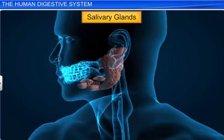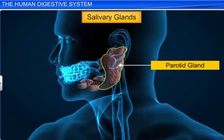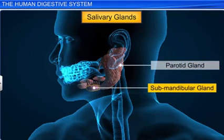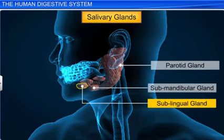There are three pairs of salivary glands: the parotid gland, located in the cheek; the sub-maxillary or sub-mandibular gland, found in the lower jaw; and the sub-lingual gland, located below the tongue.